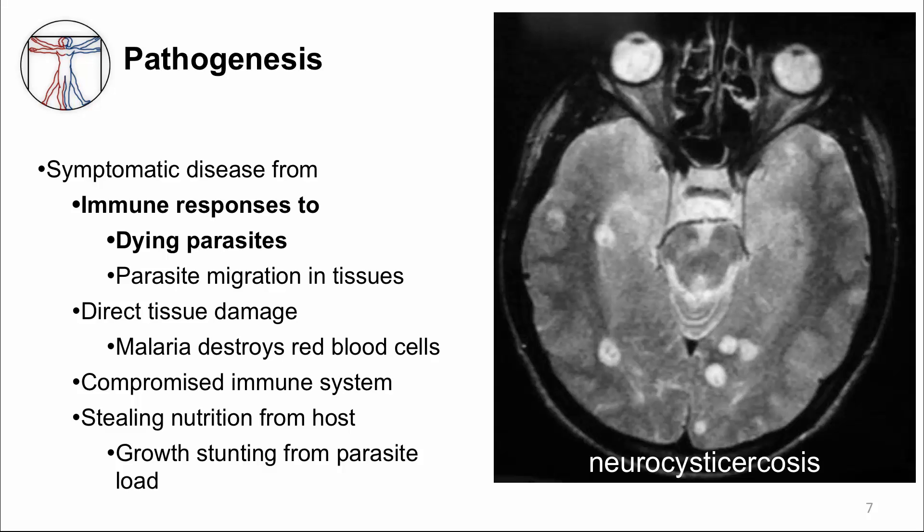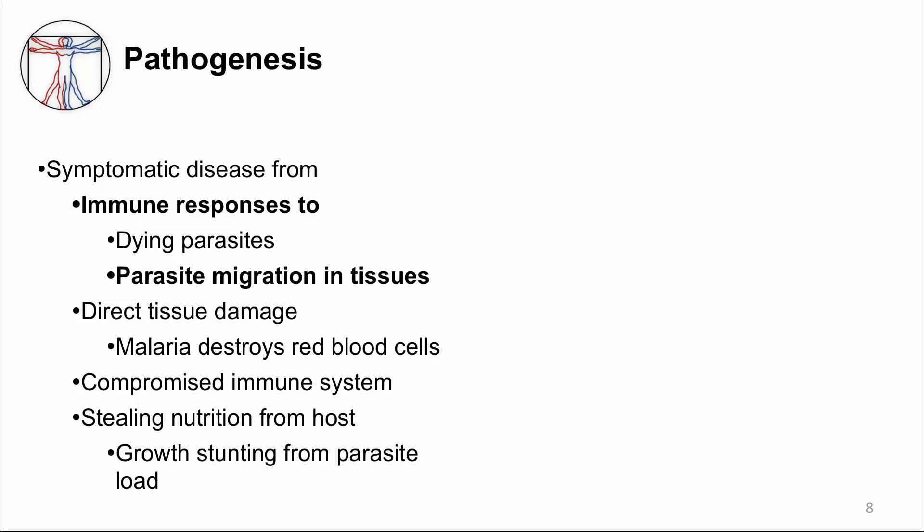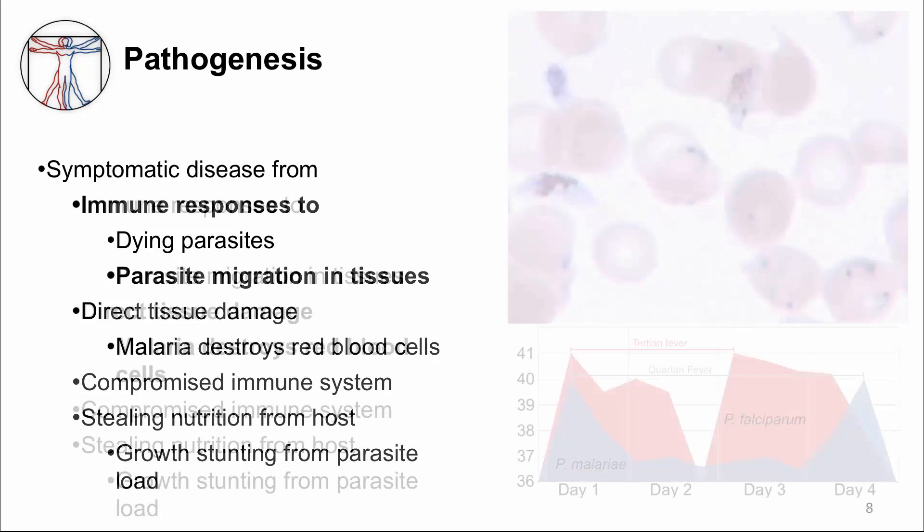Migrating but not dying worms can also elicit an immune response. Löffler's syndrome is an example of a resulting disease. It's a transient, self-limited respiratory illness from larvae migrating around in the lung tissue. It causes an acute hypersensitivity response, leading to symptoms of cough, chest pain, wheezing, and sometimes blood-streaked sputum. Eosinophils can be seen in the sputum and eventually in the peripheral blood. Unlike Löffler's syndrome where no tissue damage occurs, protozoa like Plasmodium can cause tissue damage.